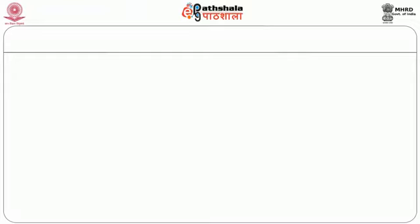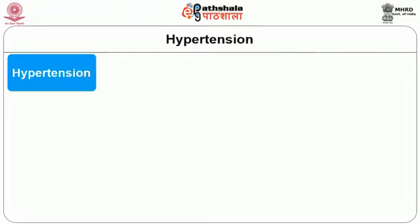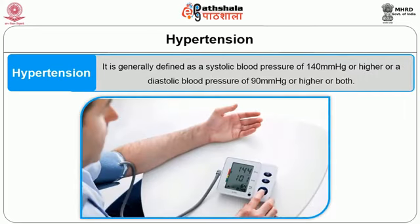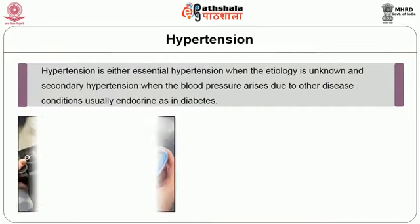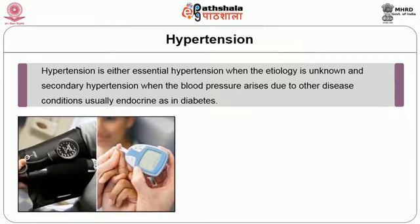Before we move on to the lesson, let us refresh and know what is hypertension. Hypertension is generally defined as a systolic blood pressure of 140 mm Hg or higher, or a diastolic blood pressure of 90 mm Hg or higher, or both. Hypertension is either essential hypertension when the etiology is unknown, or secondary hypertension when the blood pressure arises due to other disease conditions, usually endocrine as in diabetes.